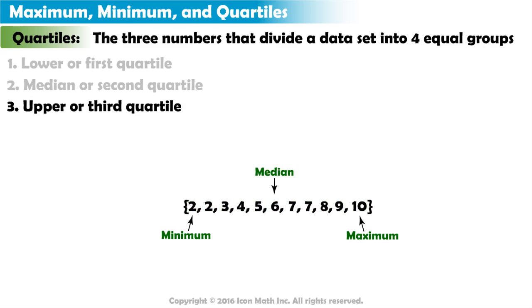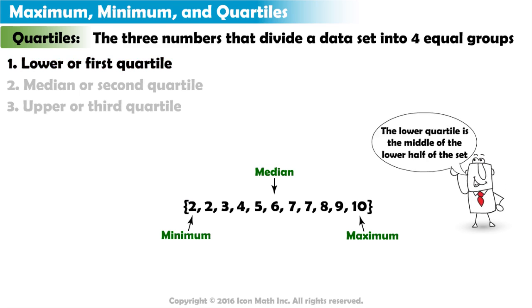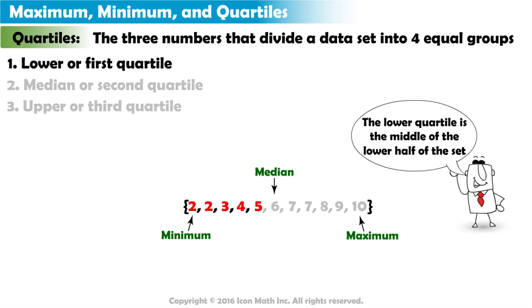Now, to find the upper and lower quartiles, we must look at the sets of numbers above and below the median. We will start with the lower quartile. To find the lower quartile, we must find the middle number for the lower half of the dataset. Since 3 is the middle number for the lower half of the dataset, 3 is the lower quartile.